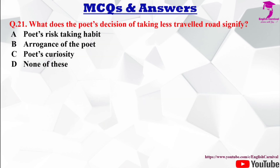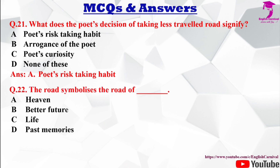Question number 21: What does the poet's decision of taking the less traveled road signify? Options: A) poet's risk-taking habit, B) arrogance of the poet, C) poet's curiosity, D) none of these. The correct answer is A — the poet's risk-taking habit.